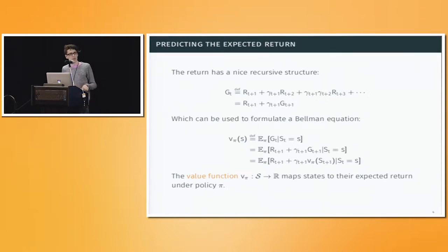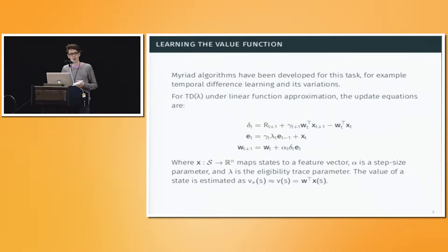The nice thing about this MDP framework and reinforcement learning is that we have a recursive structure for the return so that we can express it in terms of reward plus the discounted return starting from the next state. That leads naturally to the Bellman equation where we can describe the return as an expected value of reward plus the value function of the next state, which leads naturally to a way that you can learn to predict the return online in a fairly efficient manner.